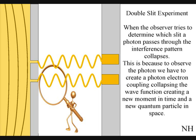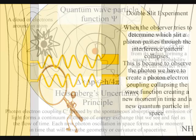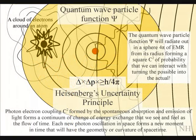When an observer tries to see which slit the photon went through by turning on an electronic detector, forming a new photon-electron coupling, the interference pattern collapses.